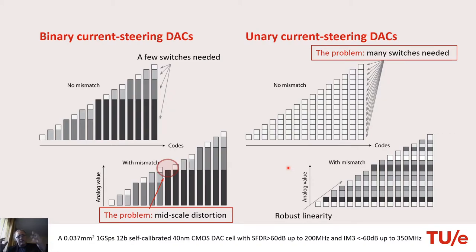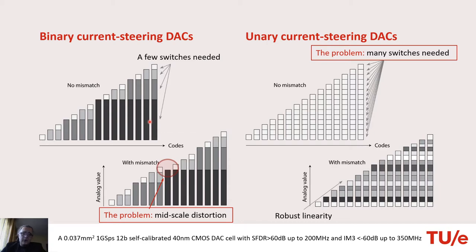The two extremes for the choice of segmentation are: binary — very efficient — or unary — very good performance. Here I illustrate the binary architecture. We have the codes here and we create the analog output value by a proper combination of four references, four components, depending on the codes. Of course, as the resolution grows, we use more components, but the key point is that the binary architecture is very efficient — we use only a few switches, only a few cells — and the analog outputs are created by combinations of these.